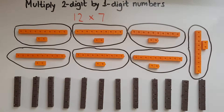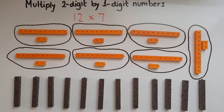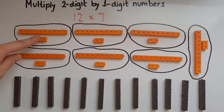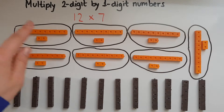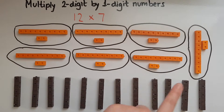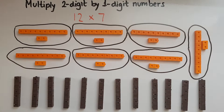So 12 times 7. I've shown here two ways that I can represent 12 times 7, or 7 times 12, because they mean the same thing. I've put lots of 12 — 10 and 2 — so there are seven lots of 12 shown with orange cubes.